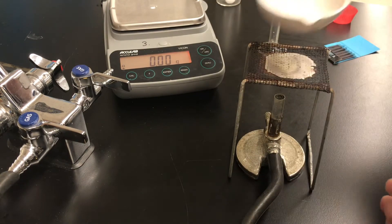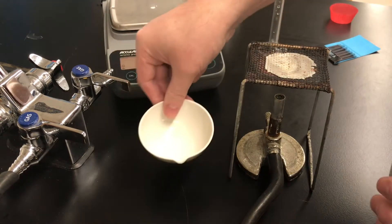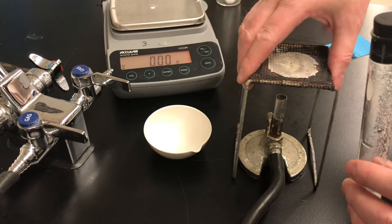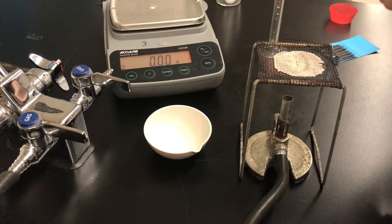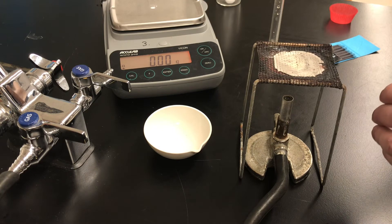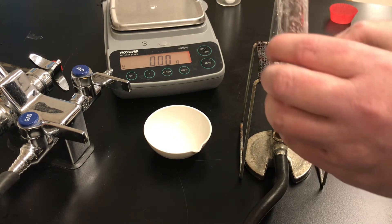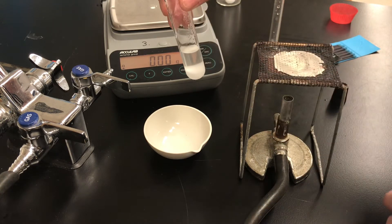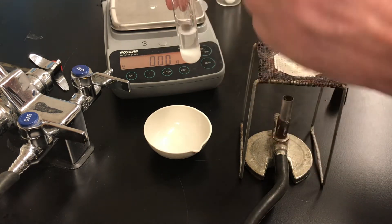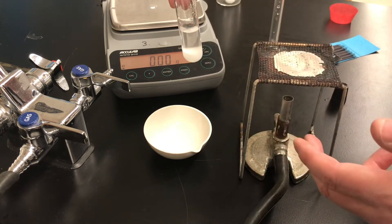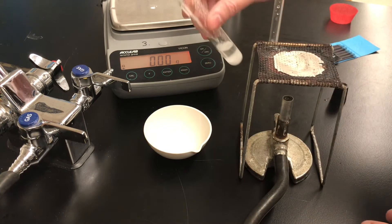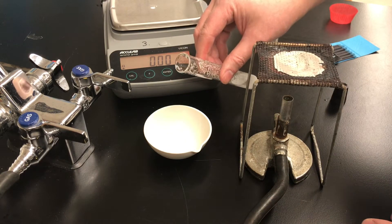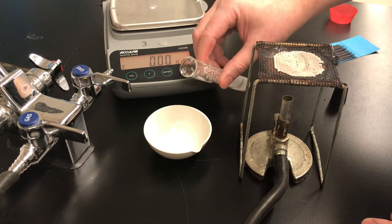Now I'm going to take my evaporating dish that we had already weighed and I'm going to decant. That's an important word you might want to write the definition down. To decant the solution means we're going to pour the saturated solution out of the test tube while leaving all of the undissolved solid behind. When you pour liquid out but you leave the solid behind you are decanting.